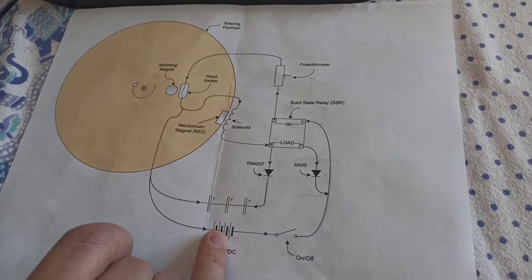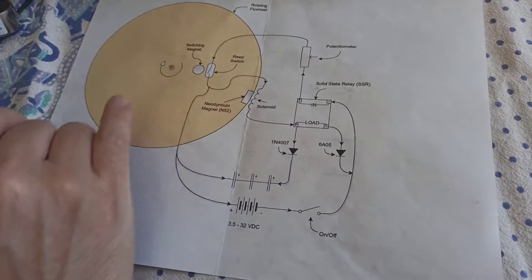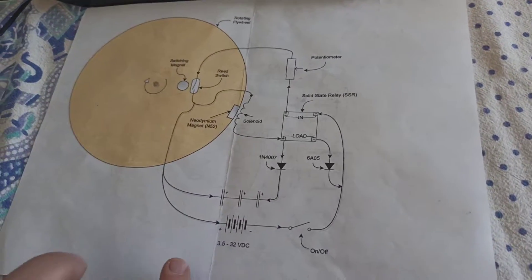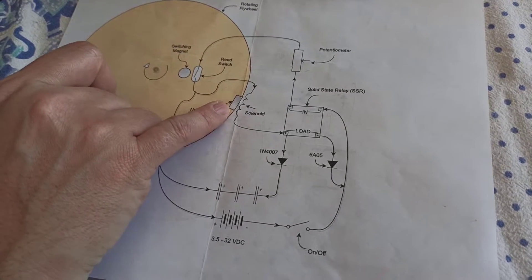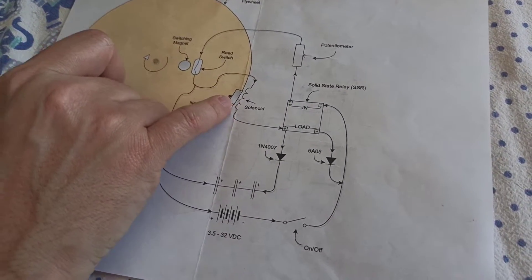Basically we take a power source, we run it through some stuff here as a potentiometer. We're not going to use most of this stuff. We're just going to go power straight to a reed switch against a magnet and a solenoid and see if we can get some push on this magnet.